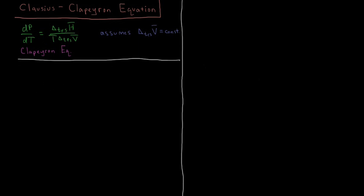If we look at the liquid-vapor coexistence curve and apply this equation, we have dP/dT — the derivative of the coexistence curve pressure with respect to temperature — equal to the molar enthalpy of vaporization divided by the temperature times the transition volume, which is the molar volume of the gas minus the molar volume of the liquid.